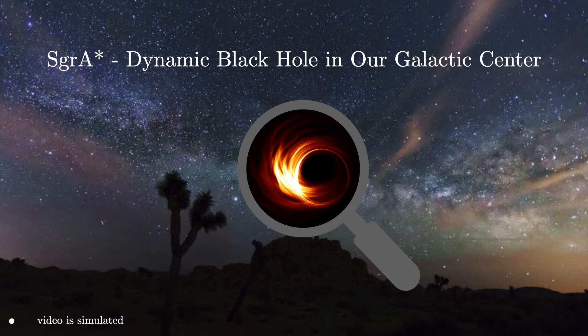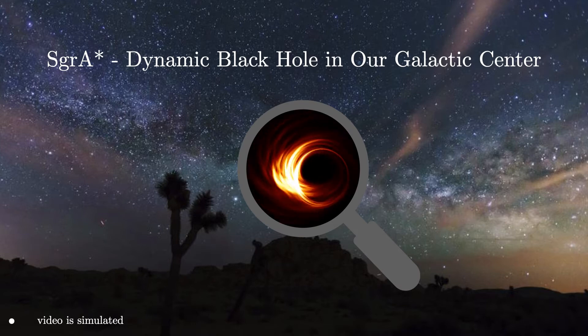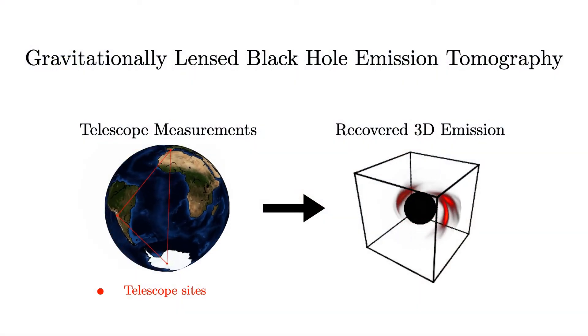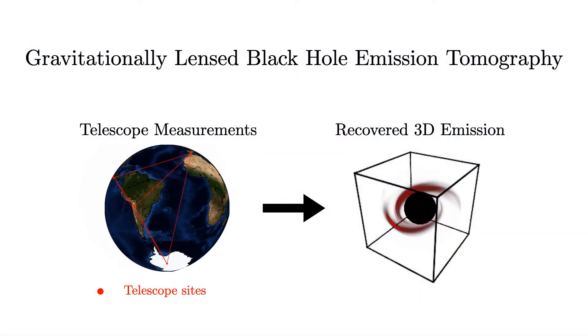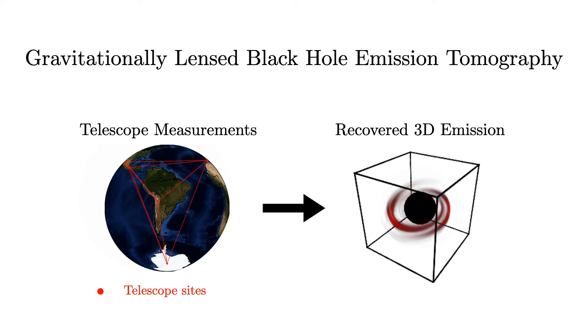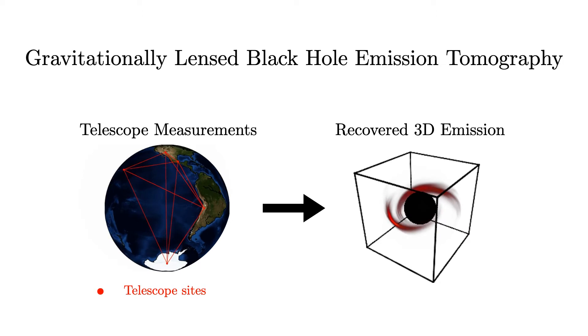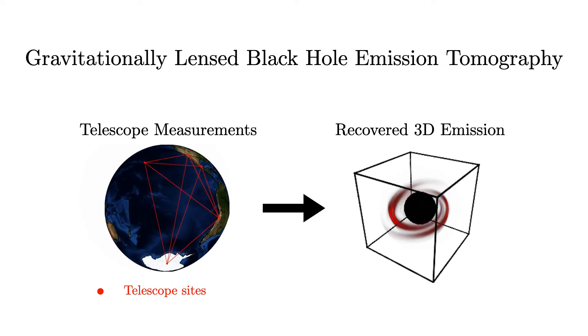Prior imaging work largely focused on developing novel algorithms for estimating the 2D image dynamics. In this work, we seek to recover the three-dimensional evolving emission around the black hole. We formulate and present a novel tomography to estimate this 4D spatiotemporal function.